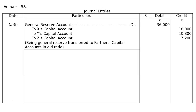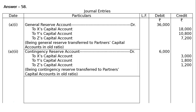General Reserve is a liability balance — it is an undistributed profit. It is to be debited for cancellation and credited to old partners in the old profit sharing ratio. Likewise, Contingency Reserve: Contingency Reserve account debited Rs.6,000.